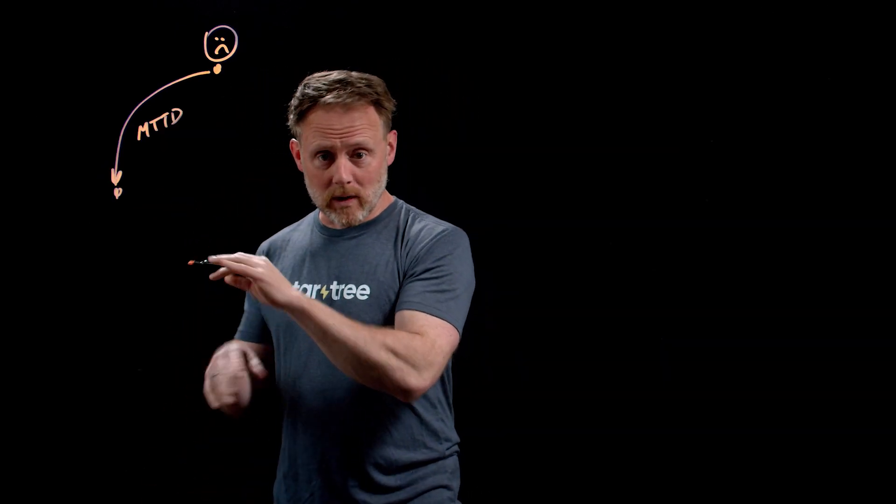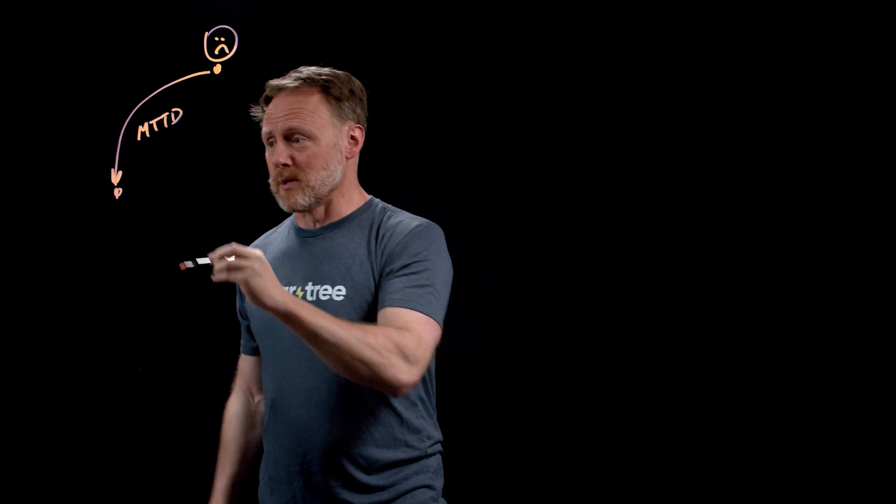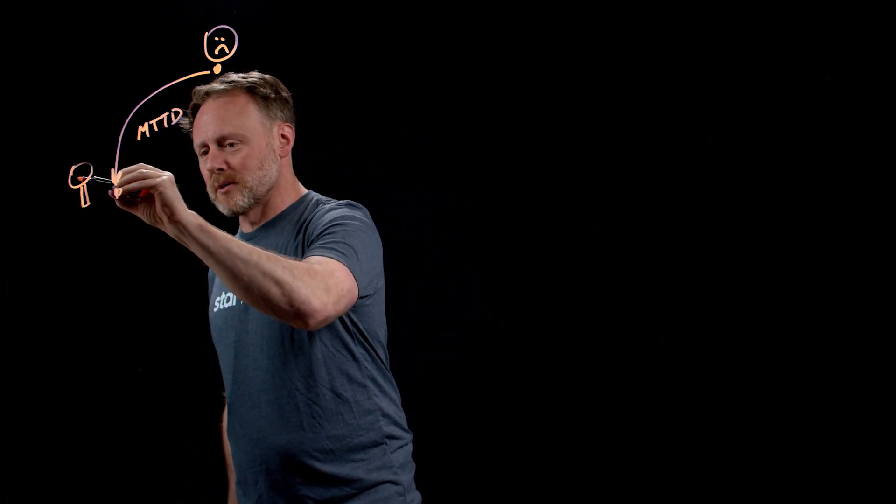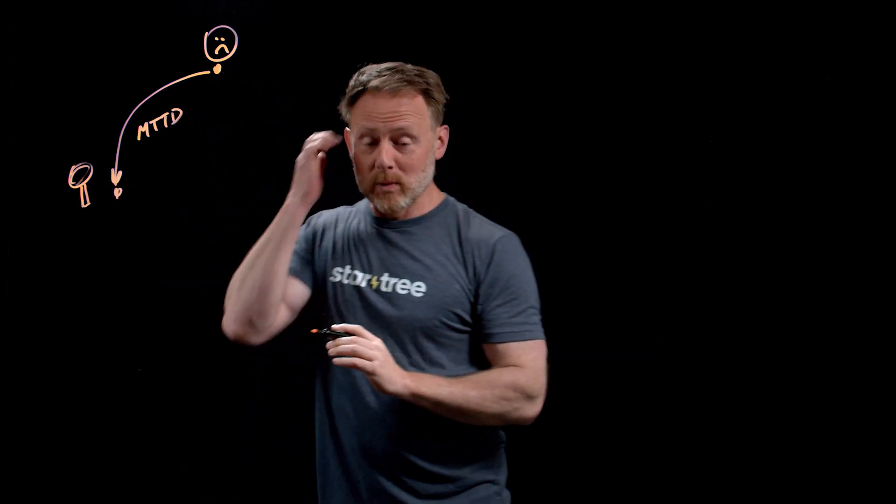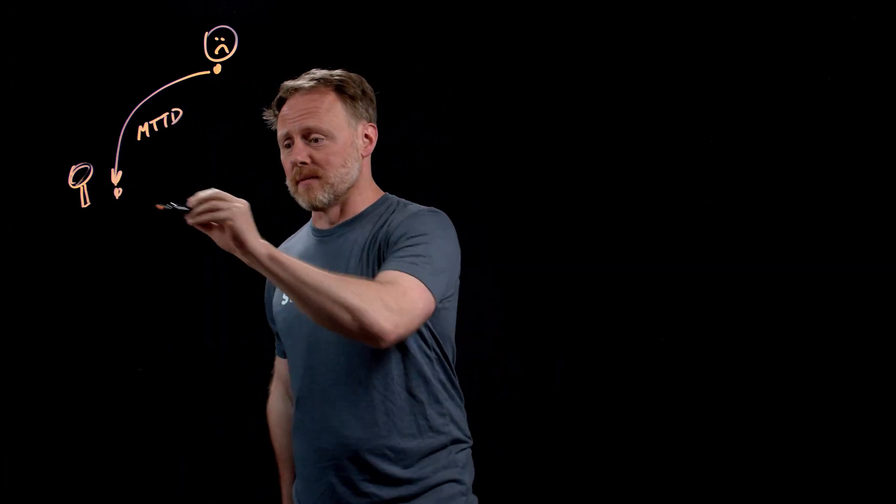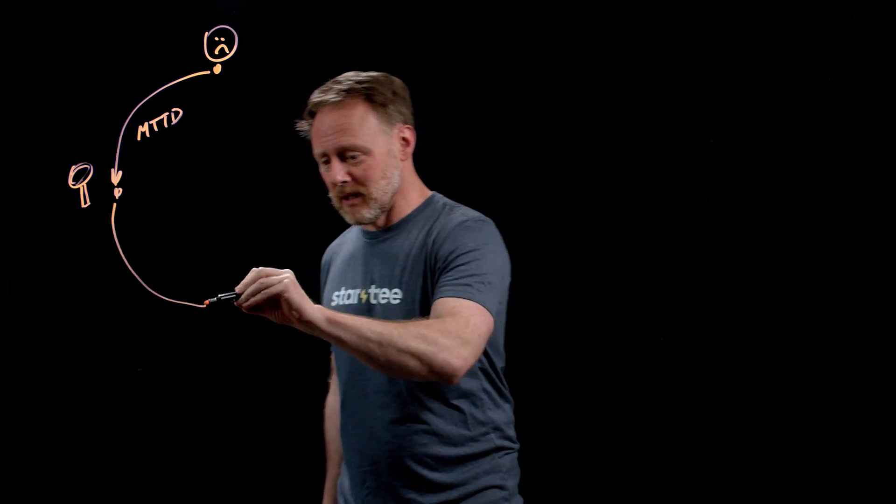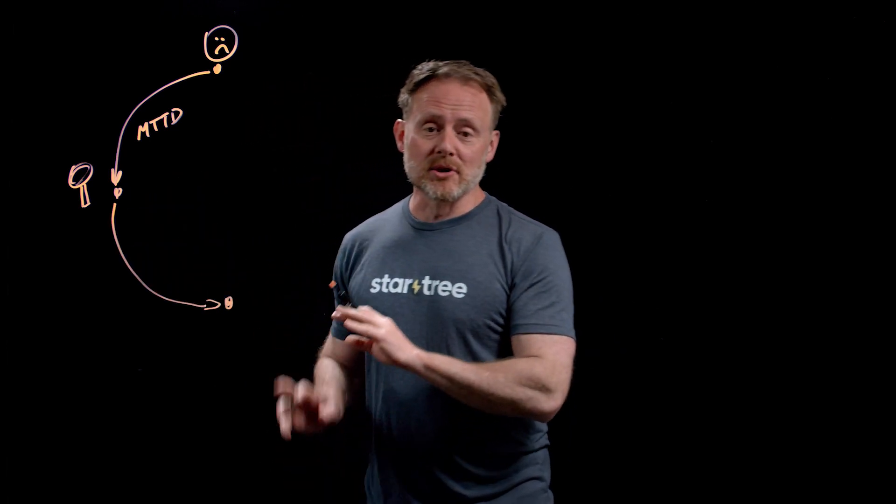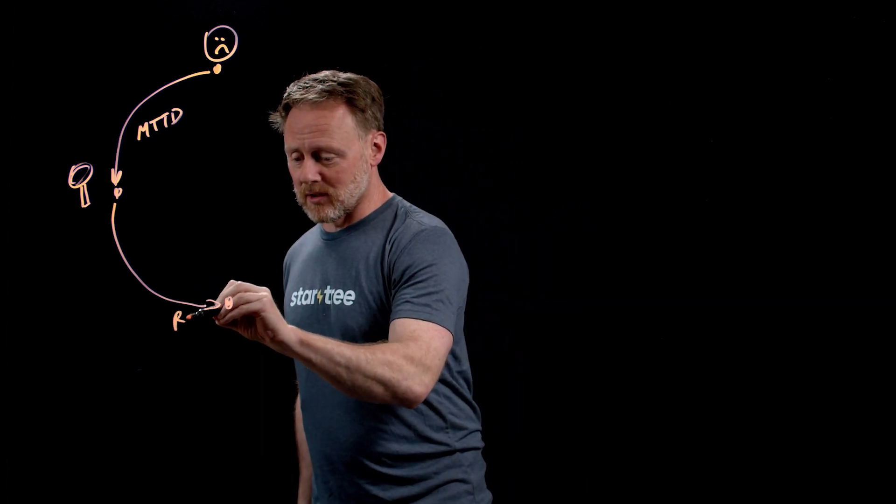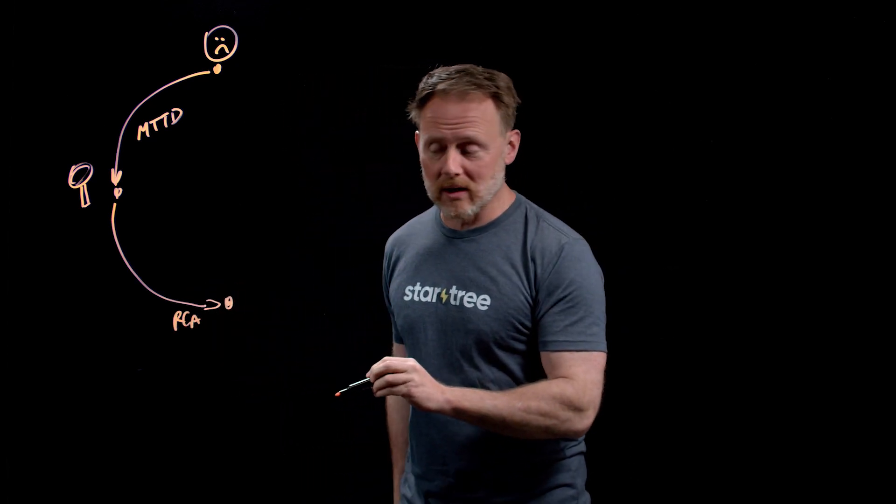And then once we know that that anomaly has happened, we start to, let's draw a little magnifying glass here, we start to look into things and investigate the cause of the anomaly. We're going to go through some kind of process here until we discover what that is. We'll say this is our root cause analysis going on.